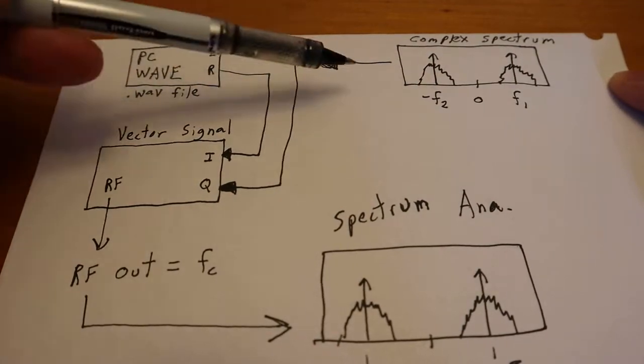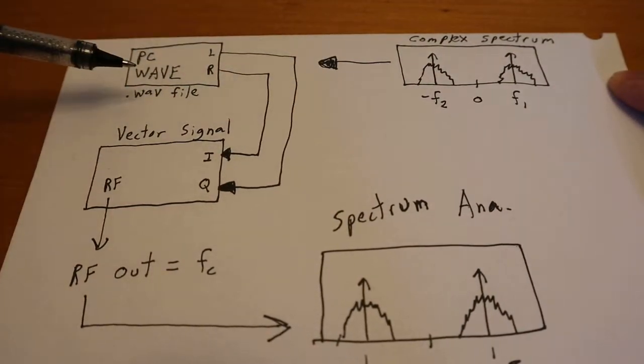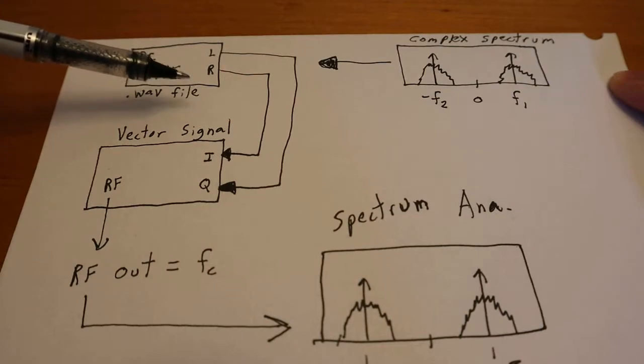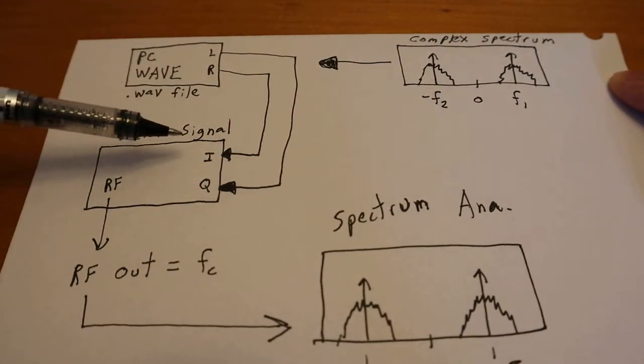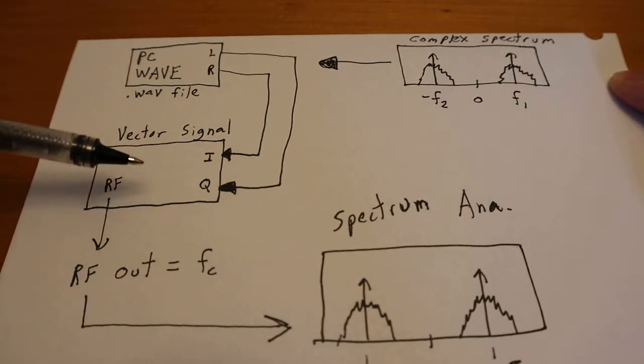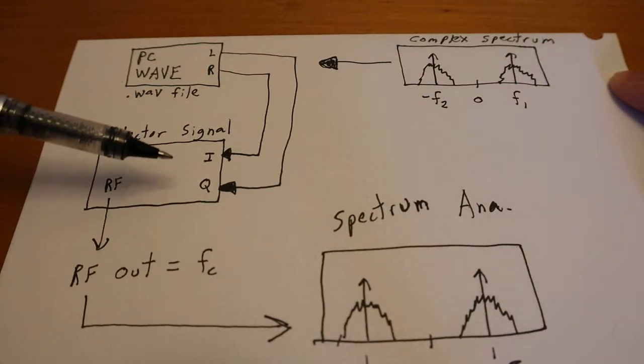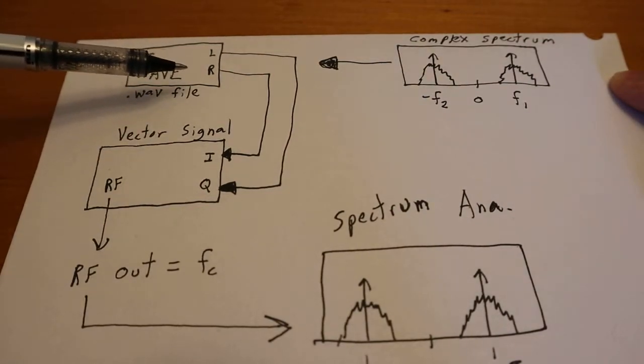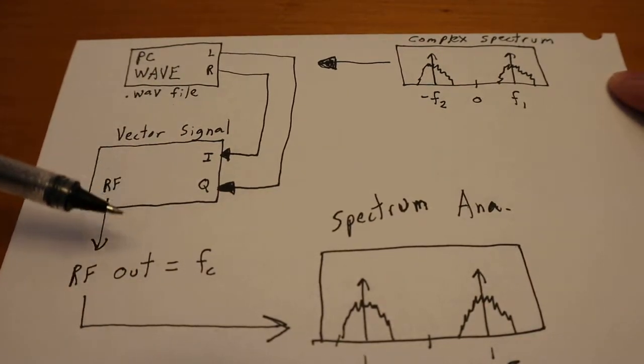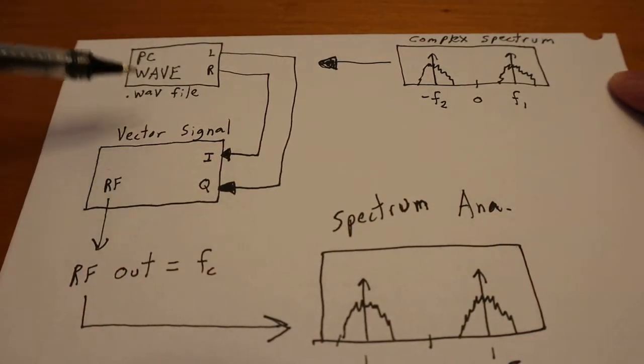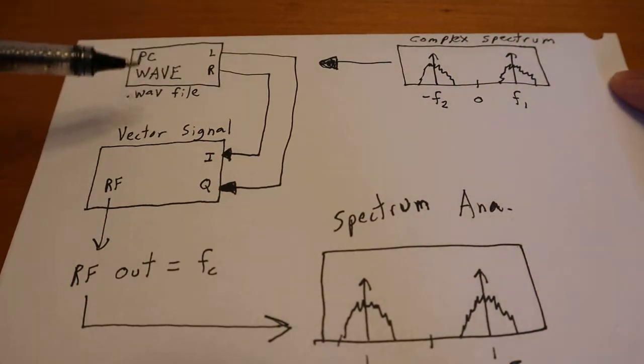You could have all this math that I was talking about be done in GNU Radio, and then output this WAV file, which then would go into these vector signal generators. Or you can have the HackRF or other guys that essentially sends the USB IQ data out to this and does this IQ vector math in their devices. So many ways to skin the cat here.